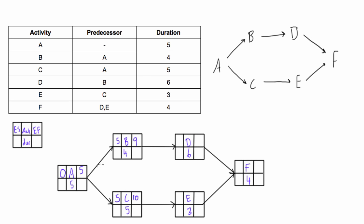Same thing here: activity A is five days long and activity C is five days long, and it can't start until these five days have already been done. So the earliest that activity C can finish is day 10, the end of day 10.